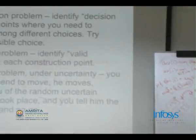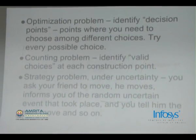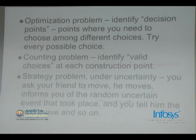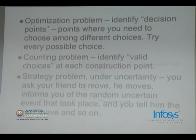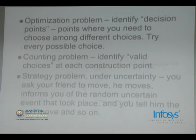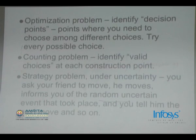We discussed three problem types. For optimization problems — minimum or maximum problems — you have to identify division points, which are those points where you must make a choice. For counting problems, you have to identify all valid choices present at a state. For strategy problems with uncertainty — the third case with probability P — you ask a friend to move, he moves, informs you of the random uncertain event that took place, and you tell him the next move, and so on.